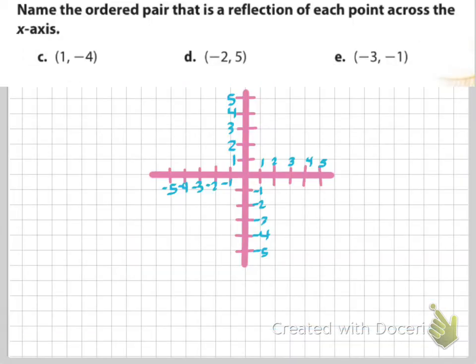Here are some examples. I want you to draw a coordinate plane with your x-axis and y-axis numbered through 5 in each direction — positive 5 up, positive 5 to the right, negative 5 down, and negative 5 to the left. We're going to figure out the reflections across the x-axis. Pause the video, build that coordinate plane, and plot those points.